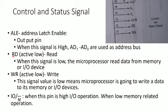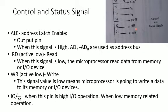When the RD signal is low, the microprocessor reads data from memory or an I/O device. This is the data read signal — when low, the microprocessor performs a memory or I/O data read.